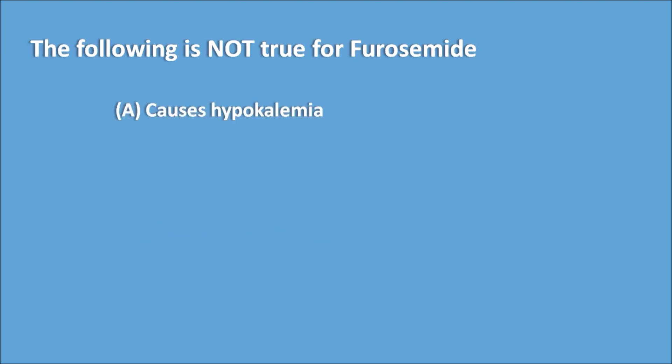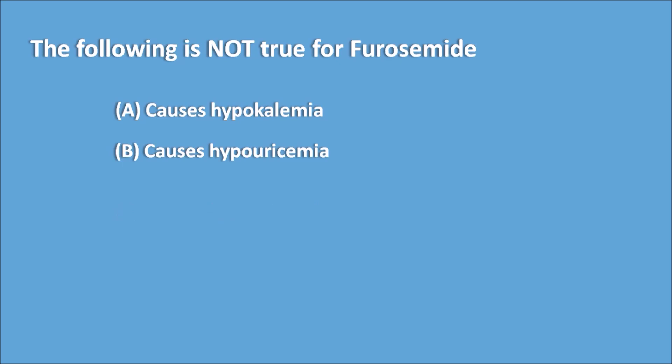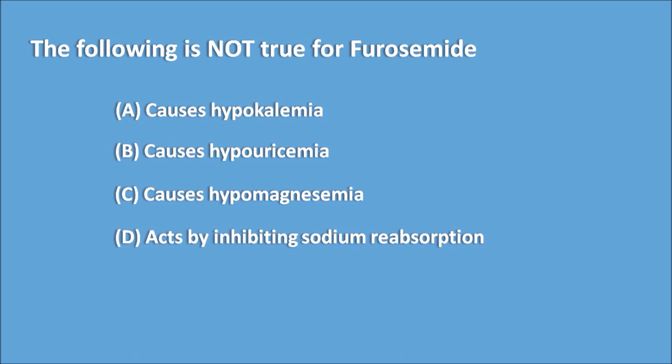The following is not true for furosemide: A causes hypokalemia, B causes hypouricemia, C causes hypomagnesemia, and D acts by inhibiting sodium reabsorption. Furosemide produces all hypos, but it causes hypouricemia is not true. So if you apply the concept, you can easily observe that option B is false for furosemide.